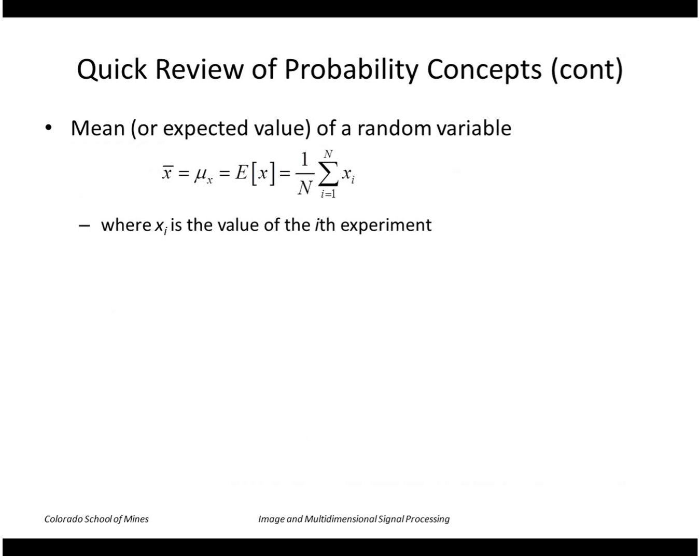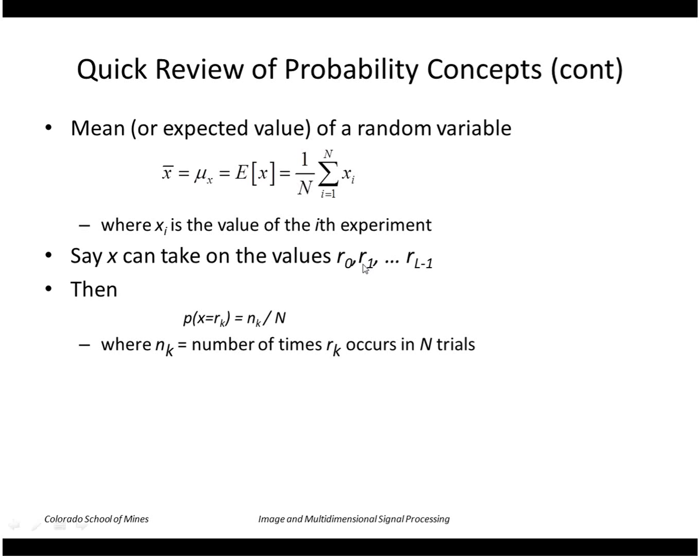Another concept is the idea of a mean or expected value of a random variable. We can compute that by summing up all the outcomes and dividing by n. Or if we know the values that can be taken on and we know the probability of each value, we can compute the mean this way: summing over all the possible values of the probability of that value times the value.